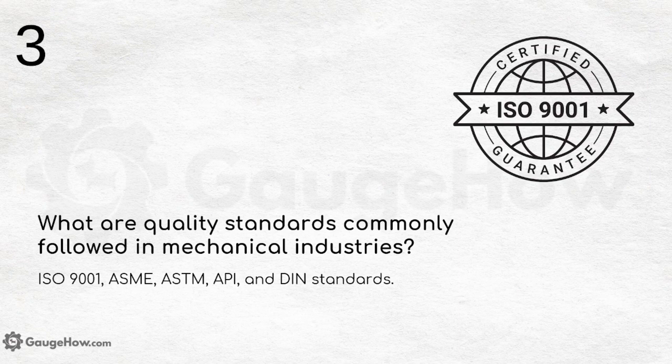What are quality standards commonly used in mechanical industries? There are different standards: ISO, ASME, ASTM, API, and DIN. ISO stands for International Organization for Standardization; ASME stands for American Society of Mechanical Engineers; ASTM stands for American Society for Testing and Materials; API stands for American Petroleum Institute; and DIN stands for Deutsches Institut für Normung — the German Institute for Standardization. You will become familiar with them as you study more about materials and quality codes.